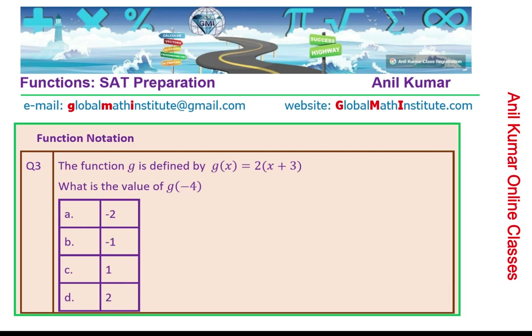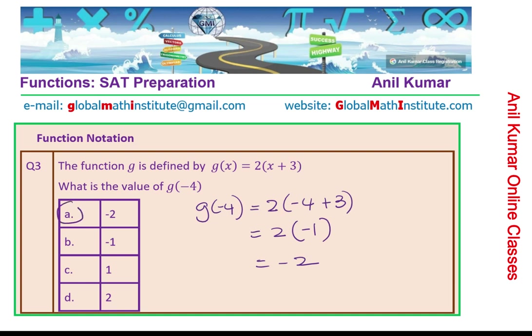Question number 3. The function g is defined by g of x equals 2 times x plus 3. What is the value of g of minus 4? We replace x with minus 4 and evaluate: we get 2 times minus 1, which is minus 2. Option A is the correct option.